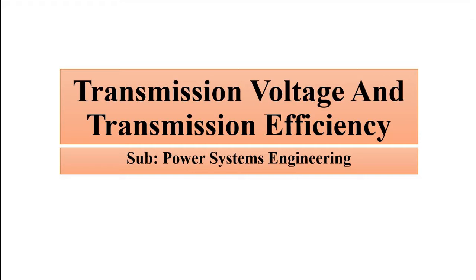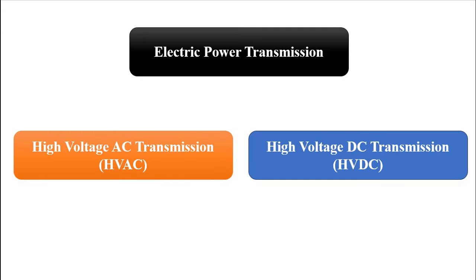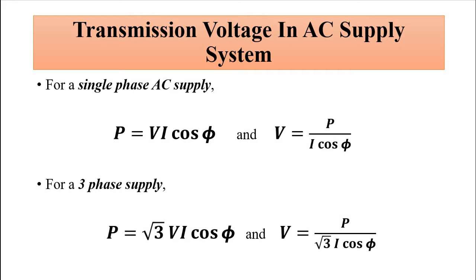In this video, we'll discuss the impact of transmission voltage on efficiency and also on the voltage drop across the transmission line. Electric power transmission happens in two ways: high voltage AC transmission and high voltage DC transmission — HVAC and HVDC. The useful power, or true power, transmitted from one point to another is P = V·I·cosφ, where V is the transmission voltage and I is the current.